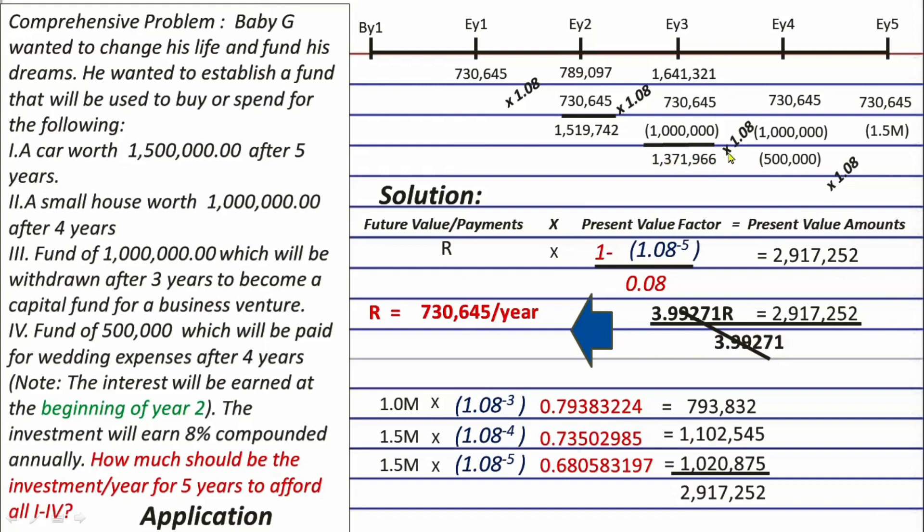Now, multiply that again by 1.08 and we will have 1,481,723 plus the fourth 730,645 but minus 1,000,000 for the house and 500,000 for the wedding expenses equals 712,368 times the final 1.08 and we will have 769,357 plus the final 730,645 and minus 1.5 million for the car equals 2.